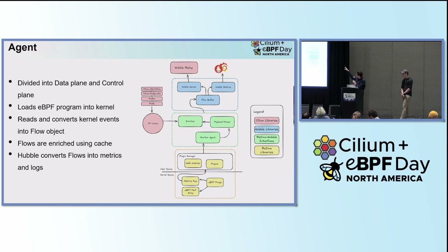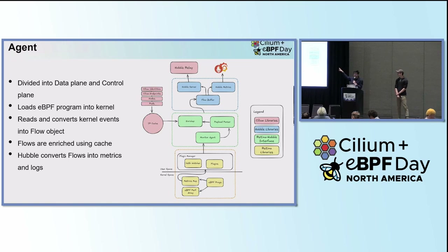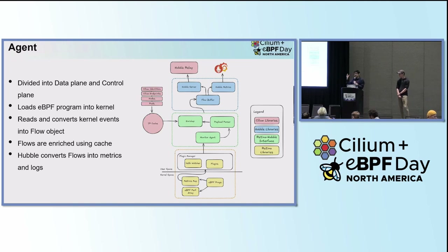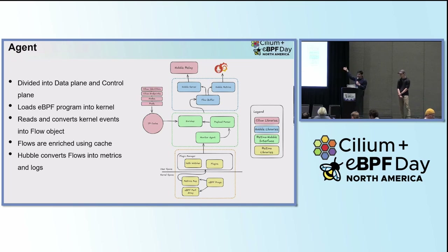I'll talk about identities and endpoints a little bit later, but trust me — we need all those things in a cache to enrich the flow. Next, we forward it to the Hubble server. Most of the blue components are open-source Hubble libraries that take the flows and generate metrics and traces on the same ports and interfaces you would expect in a Cilium cluster. You get Prometheus metrics, you can use the same Grafana dashboard you have for Cilium clusters, use Hubble Relay to get flows from all agents, or curl the endpoint for metrics.